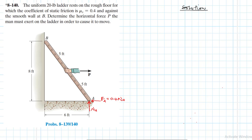We also have the weight acting at the center of gravity — 20 pounds — and the force P is applied at that same point. The force P acts in the horizontal direction while the weight acts in the vertical direction.